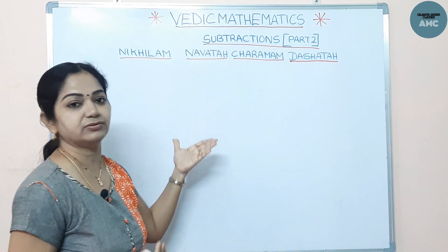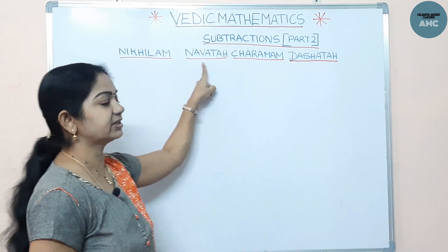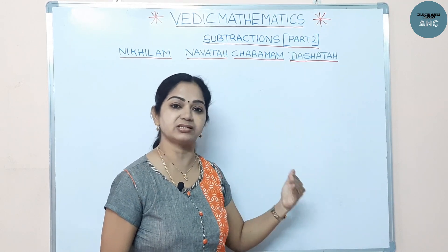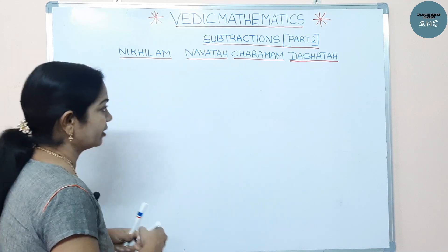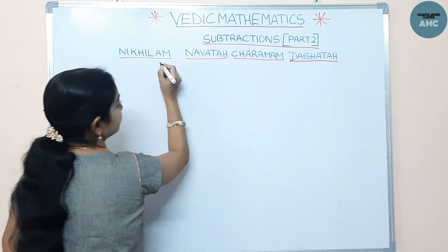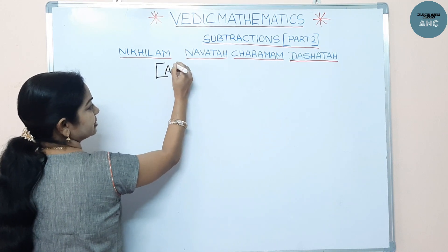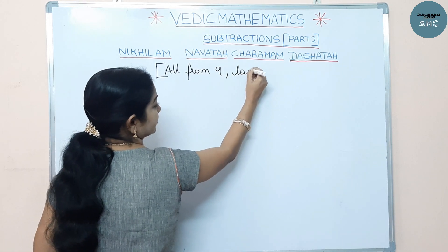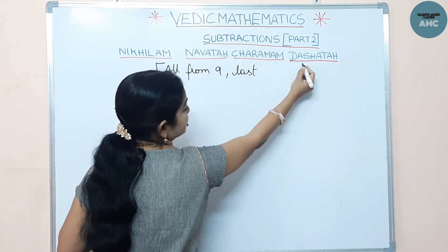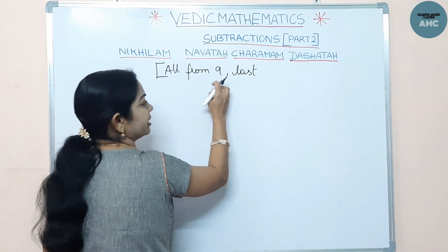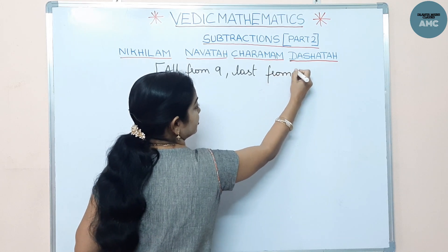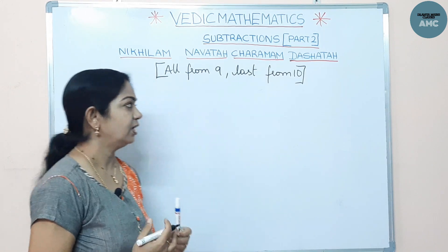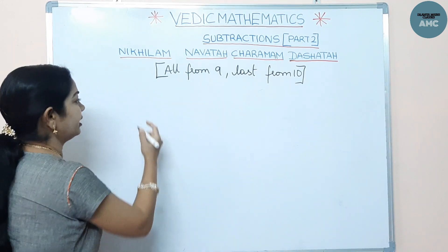The sutra we are going to use is 'Nikhilam Navatascha Charamam Dashataha.' This sutra will make subtractions faster and easier. Its English equivalent is 'All from Nine, Last from Ten' — Charamam means last, Dashataha means ten, Navatascha means nine. This concept makes subtractions even faster.